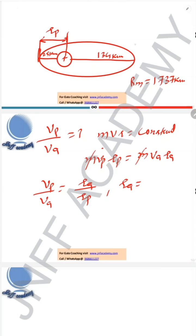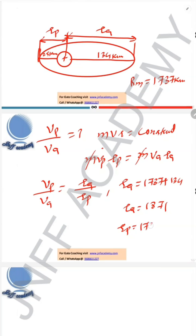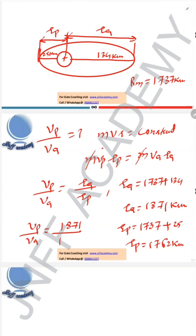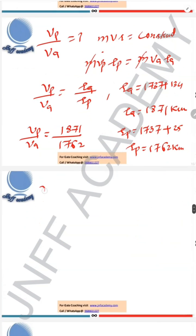Here r_a and r_p are the distances from the center of the Moon at apogee and perigee respectively. r_a = 1737 + 134 = 1871 kilometers, and r_p = 1737 + 25 = 1762 kilometers.